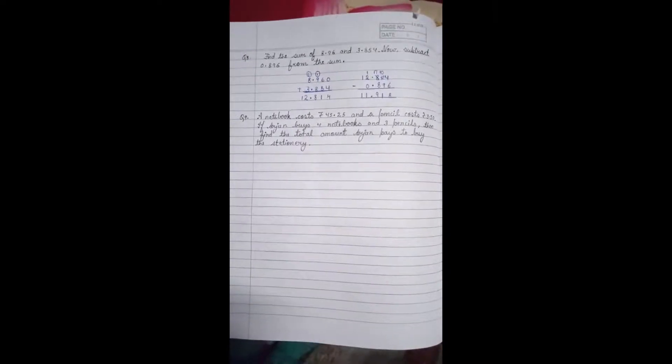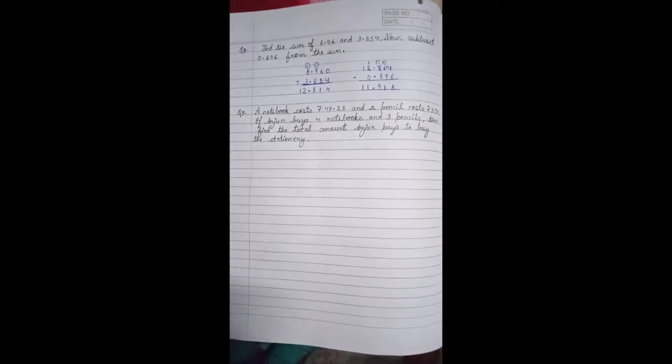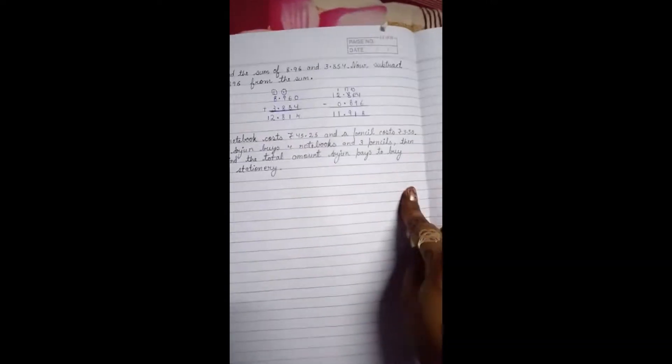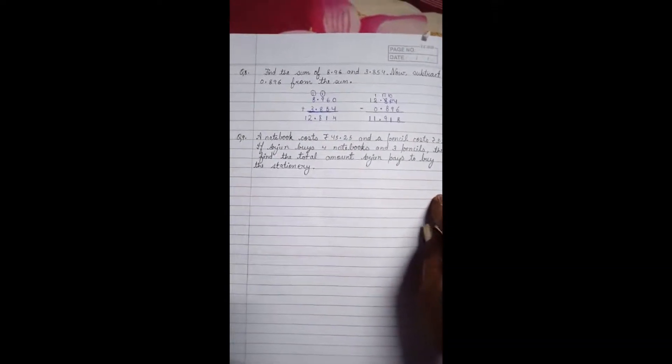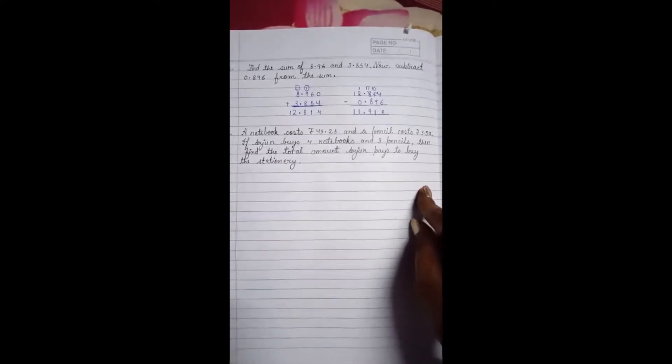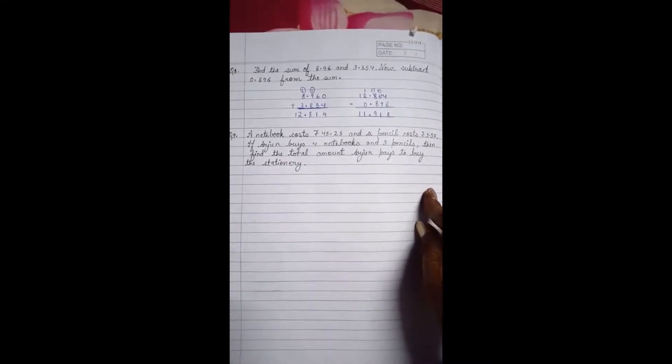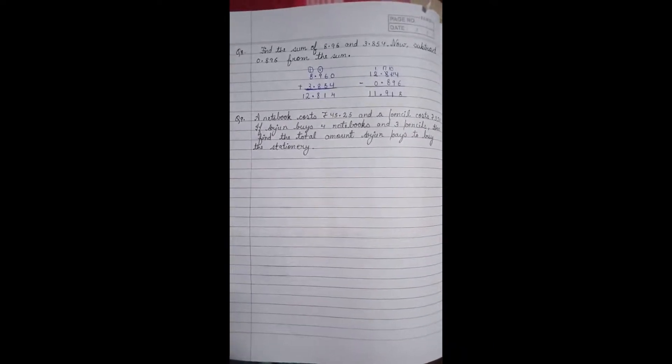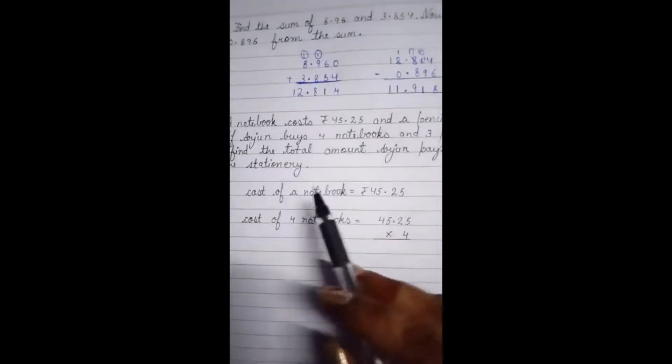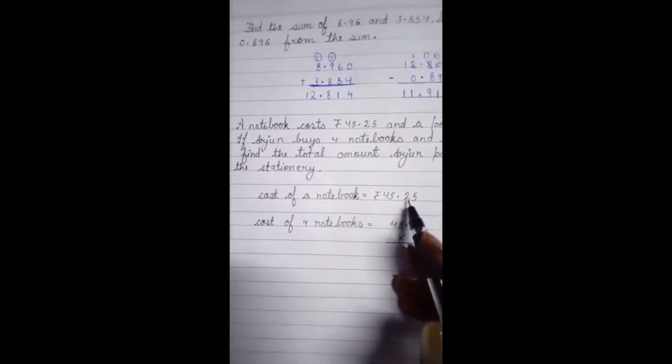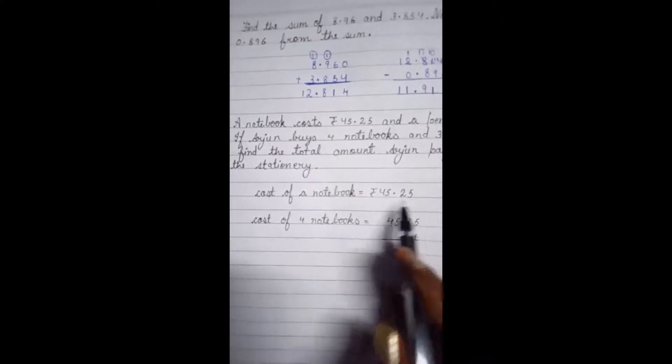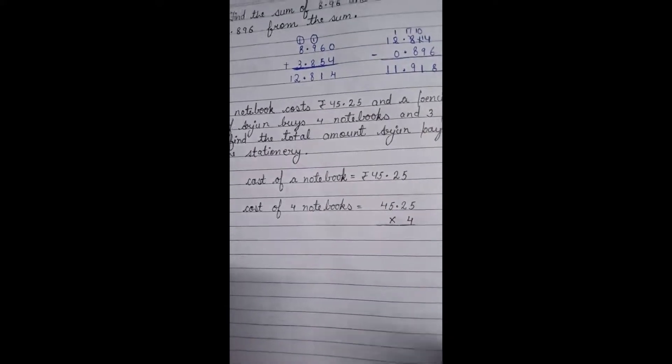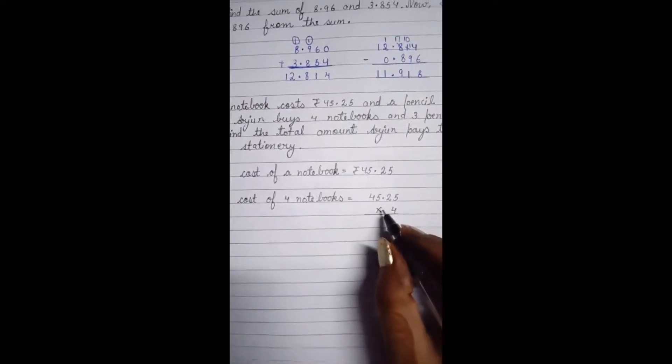The next question is question number 9. A notebook cost 45.25 rupees and a pencil cost 3.50 rupees. If Arjun buys 4 notebooks and 3 pencils, then find the total amount Arjun pays to buy the stationery. Here we will first write down the cost of our notebook. Cost of one notebook is 45 rupees 25 paise. So cost of 4 notebooks will be 45.25 multiply by 4. We have to multiply it by 4.